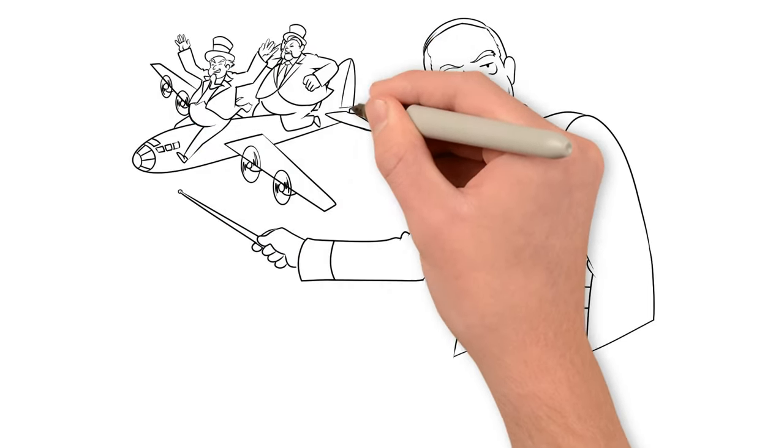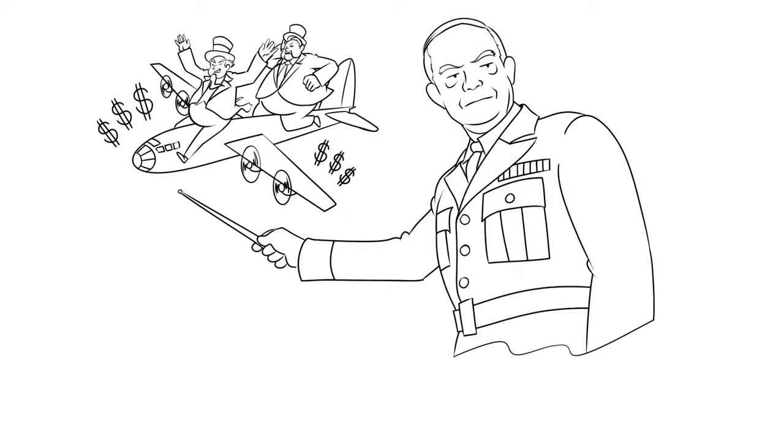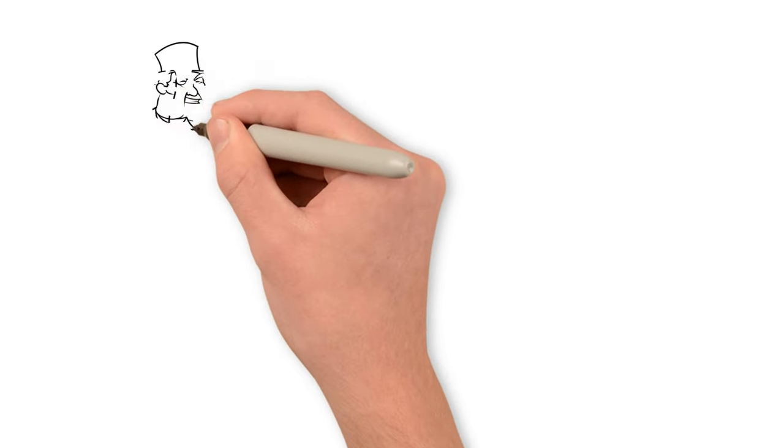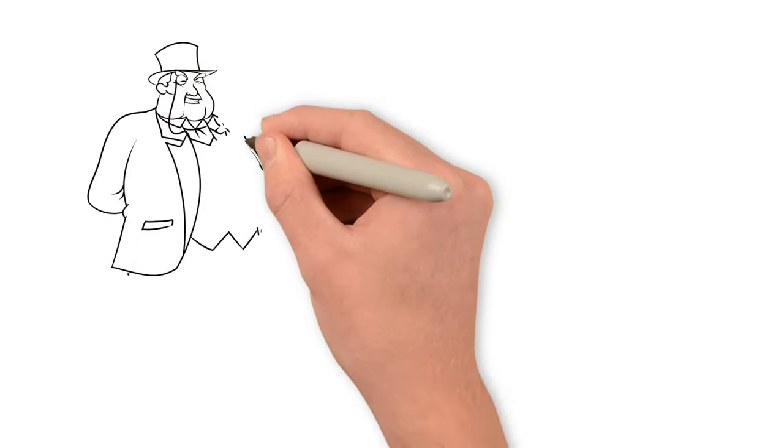In an early draft of his farewell address, Eisenhower described this as the military-industrial-congressional complex. Political scientists call this the iron triangle of connected interests.